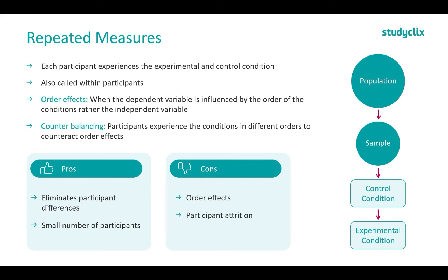Another thing we have to worry about is participant attrition. Participant dropout is quite likely in these experiments because people have to keep coming back. It's quite a long process — they have to experience two conditions, sometimes more. Participants may not want to keep coming back, so you can get participant dropout.